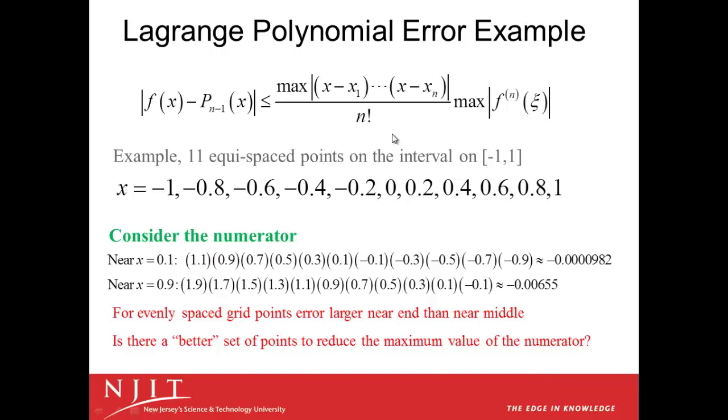Let's consider an example. We have the Lagrange polynomial error expression, and suppose we consider a function on the interval from minus 1 to 1, and we take 11 equispaced points. We take the n points, minus 1 and 1, and 9 points in the middle. So we have minus 1, minus 0.8, minus 0.6, and so forth, until we get to 1. So let's consider what this numerator looks like, since we really have no control over the denominator nor the nth derivative of the function.